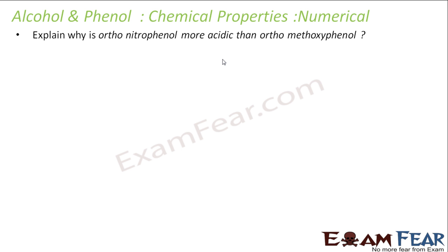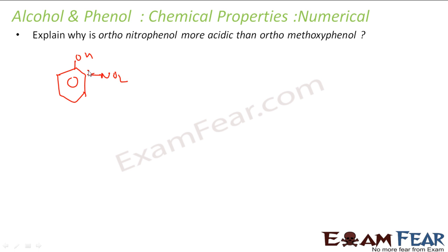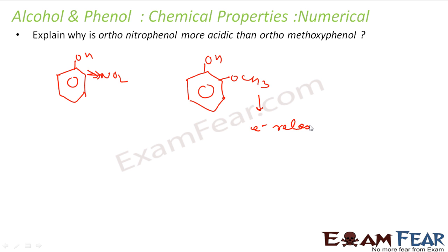Why is ortho nitrophenol more acidic than ortho methoxyphenol? In ortho nitrophenol, the nitro group is an electron-withdrawing group. In ortho methoxyphenol, the methoxy group is an electron-releasing group.